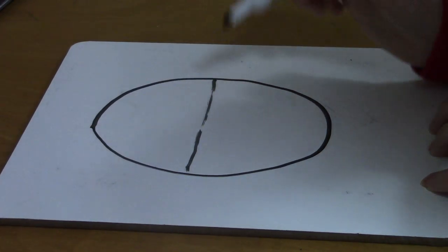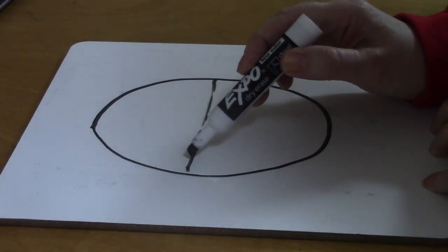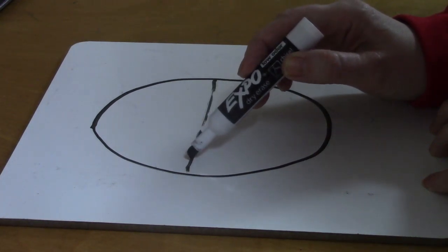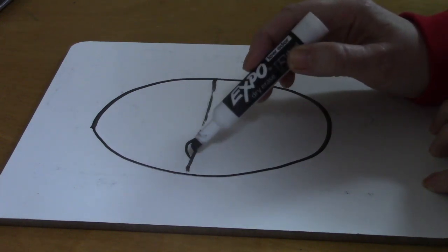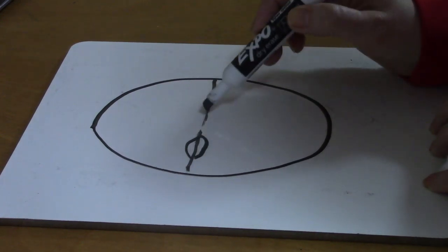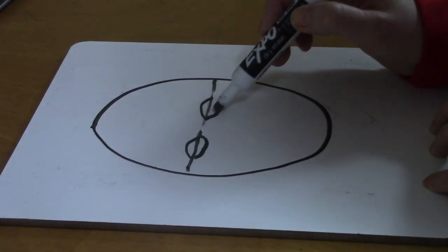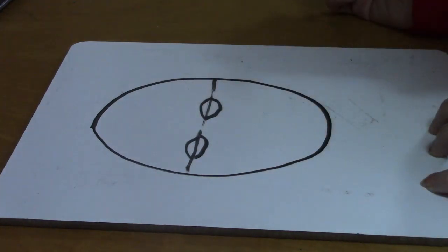Eyes are very easy to draw. Eyes are like almonds. We're going to draw two lines, an arch line, another arch line, an arch line, another arch line. And now we have our eyes.